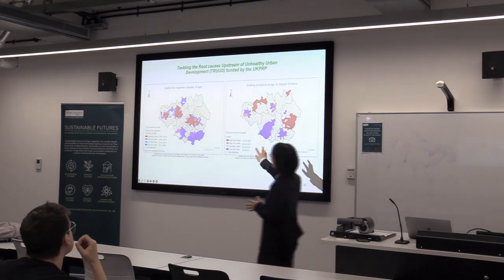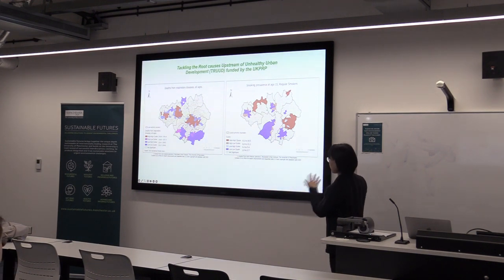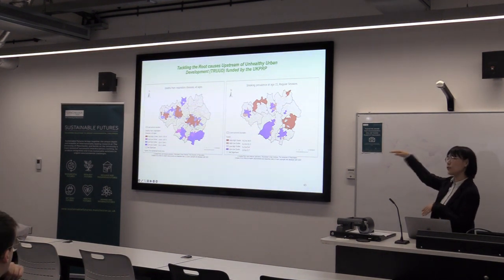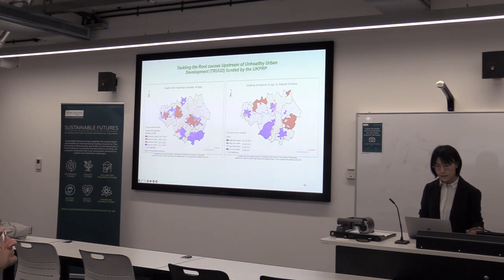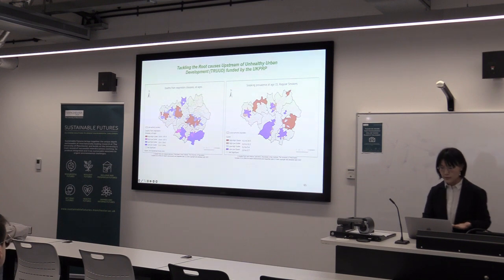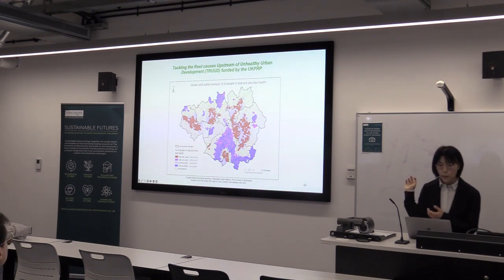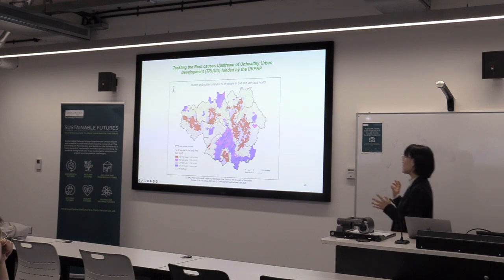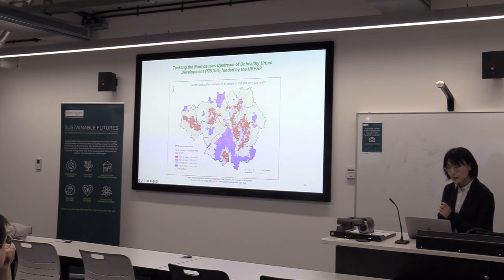When we try to link it with smoking prevalence for young teenagers, you can see there is no spatial relationship from a spatial perspective. This makes sense because that is death rate from respiratory disease, and this is year 15 smoking prevalence, so we need to think about other factors driving deaths from respiratory disease. Another example is the percentage of people in bad and very bad health based on census data 2021, where clusters are concentrated in northeast Manchester City, Rochdale, and somewhere in Oldham and Tameside.